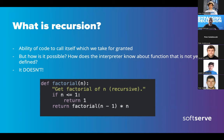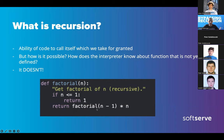How is it even possible that we have recursion and take it for granted? For early programming languages, it was not the case. Early Fortran didn't have it for a simple reason: if you define a function and inside that function you refer to it, the compiler hasn't finished implementing and defining that function yet - it's not there yet.